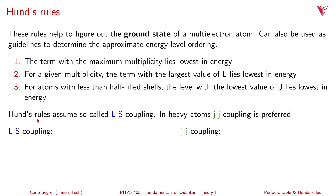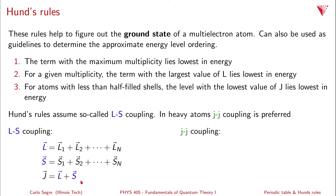In LS coupling, you take all the individual orbital angular momenta l1 through l_N and add them to get the total orbital angular momentum L. You do the same for the spins s1 through s_N to get total spin S. Then j is obtained from L plus S. Remember these are vectors, so you add them pairwise in the proper quantum mechanical way, which gives many possible states.